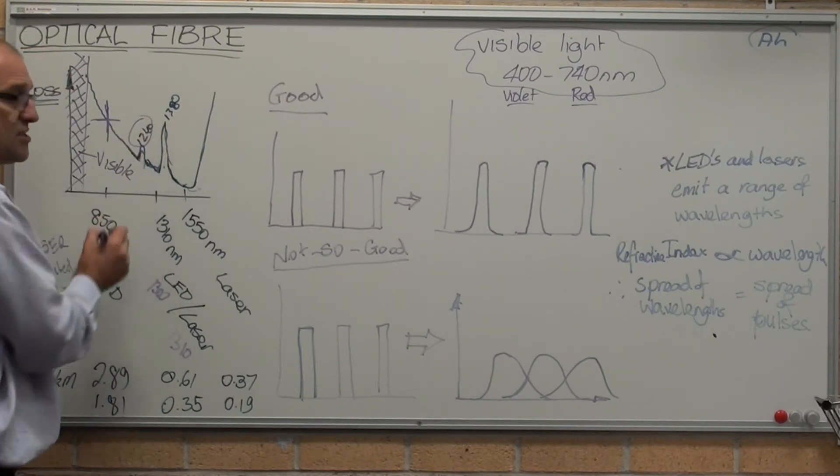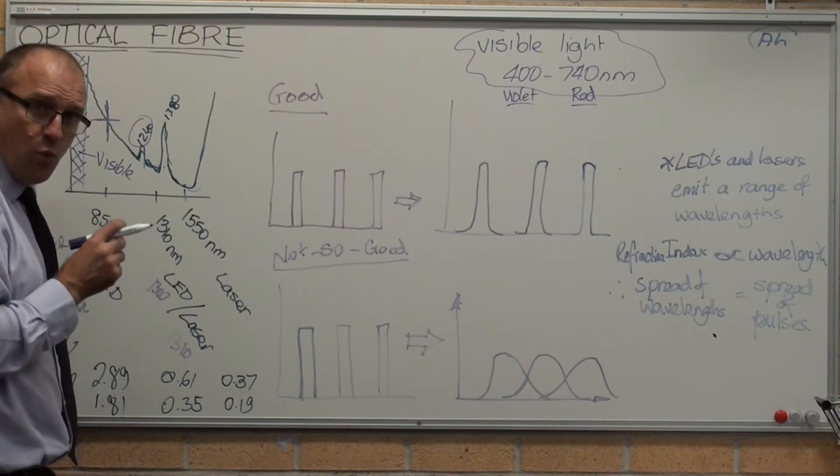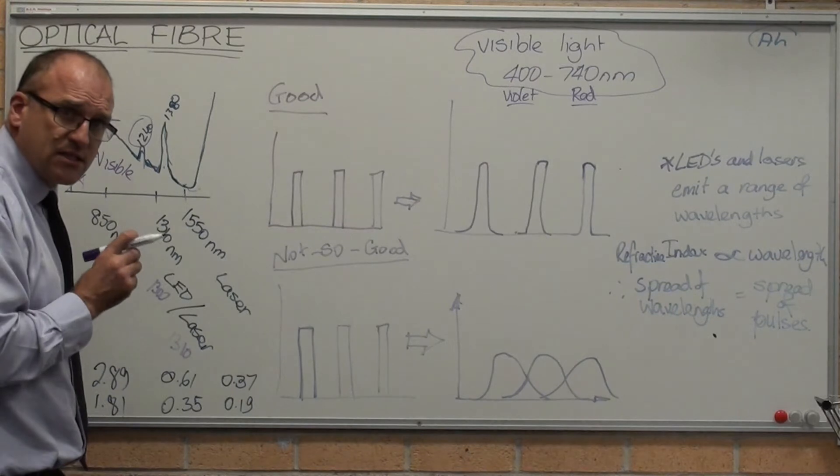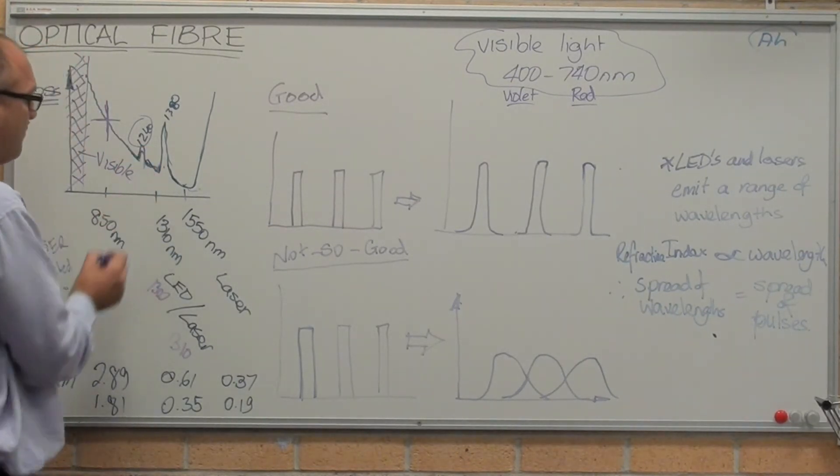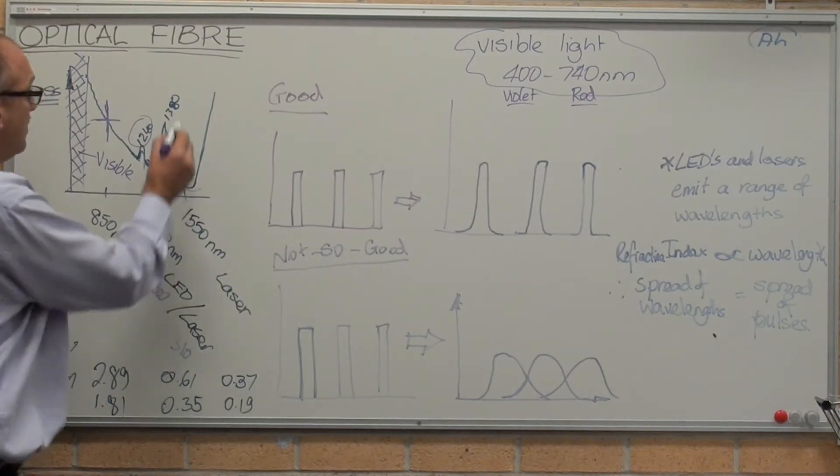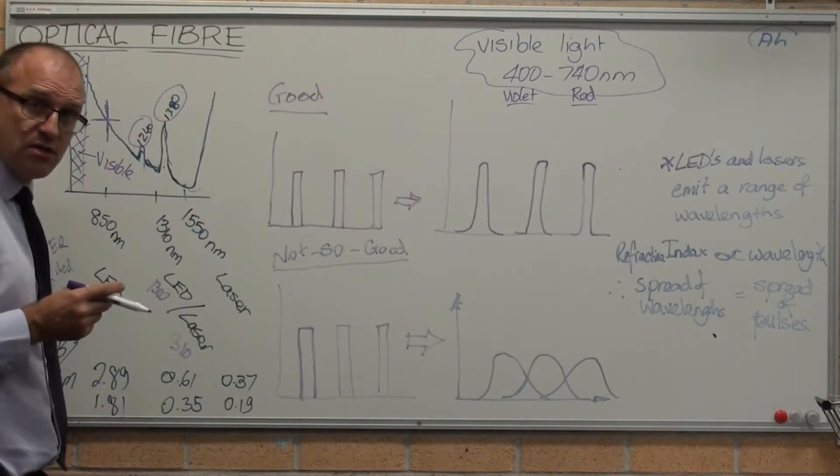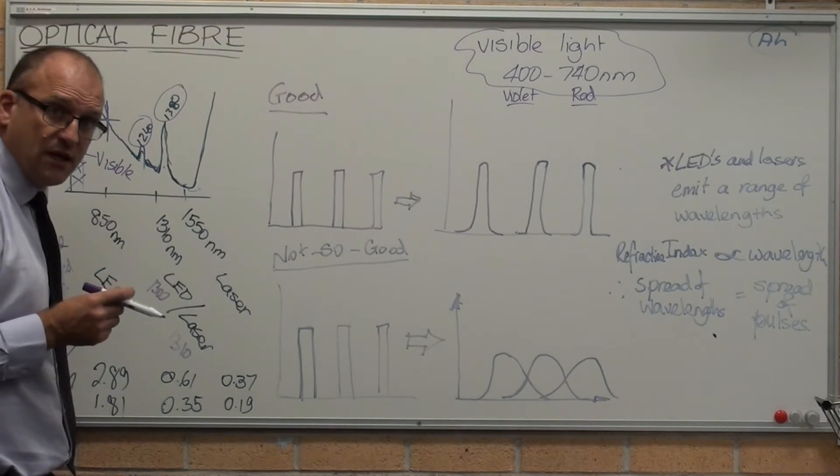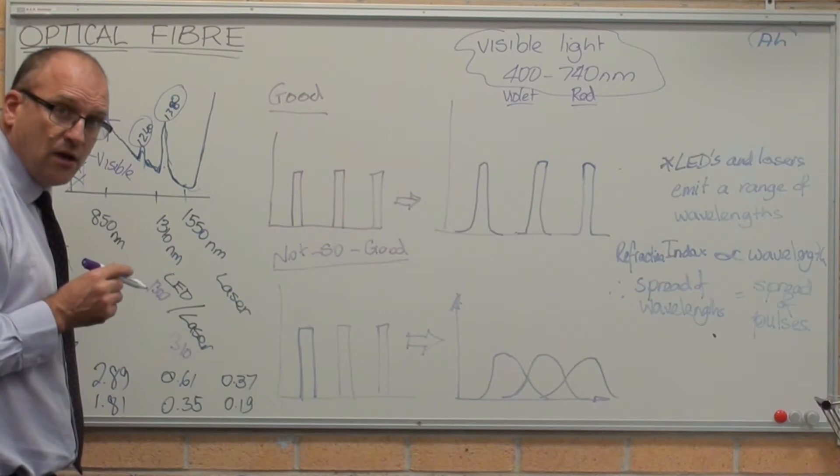At around about 1240 nanometers, the water that's present inside the glass starts to absorb the laser light. So you cannot use 1240 nanometer light. You cannot use 1380 nanometer light because of the physics involved in transmitting light through glass. It just interferes with water and you lose your effectiveness.